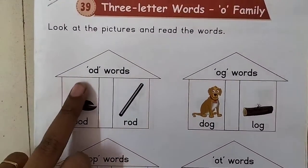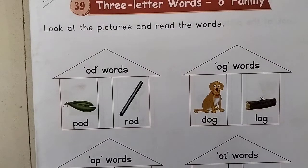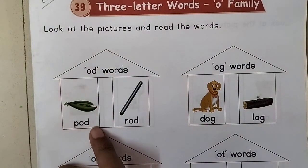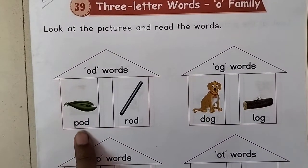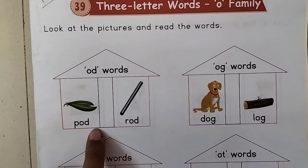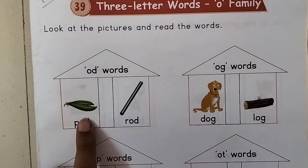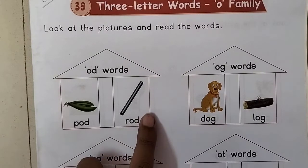चलो, page पे two letter words देखो। O, D — इसका साउंड क्या होता है? अब इसको लेकर हम three letter words बनाएंगे, जिसमें Consonant-Vowel-Consonant होगा। सबसे पहले P, O, D — Pod। Pod यानी की छिलका, जो मटर हम फोड़ते हैं, उसका छिलका होता है ना। फिर R, O, D — Road।